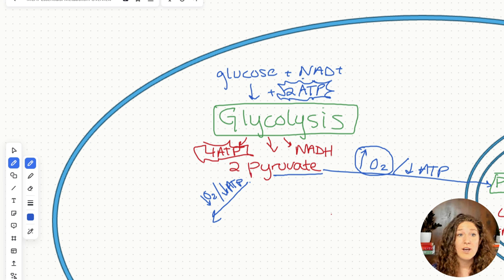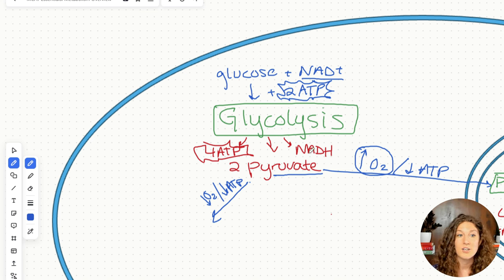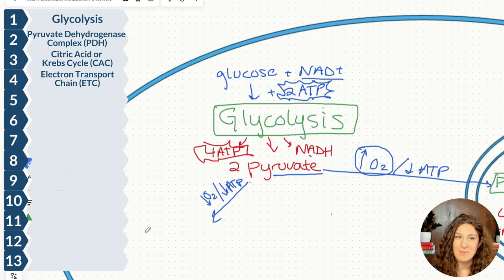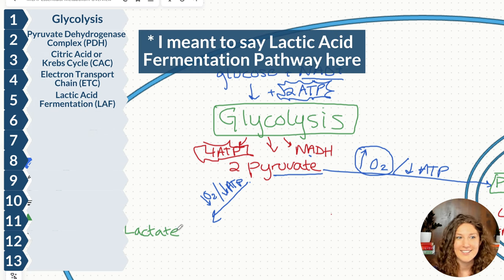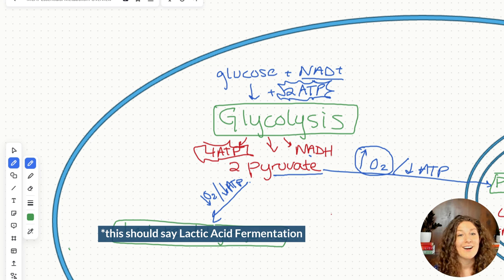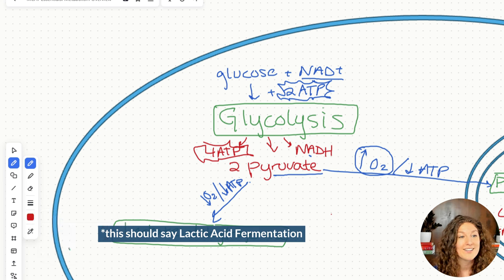In order to keep running glycolysis, we not only need a steady supply of glucose, we need a steady supply of NAD+, which is a limited resource in our cells. So we need a way to turn our NADH back into NAD+. The way we do that is by converting pyruvate to lactic acid via the enzyme lactate dehydrogenase. Lactate dehydrogenase takes our pyruvate and turns it into lactate, but our real goal is the other product — NAD+.